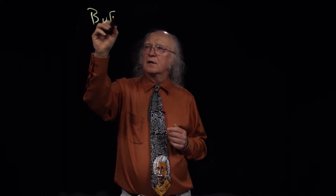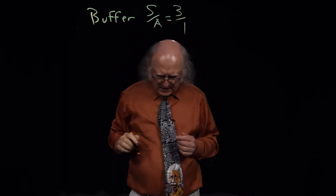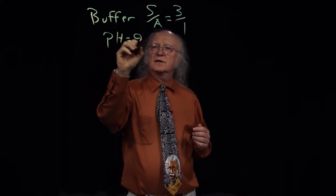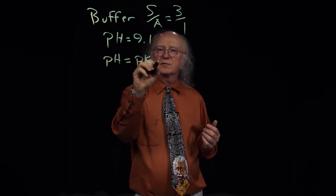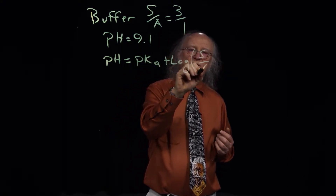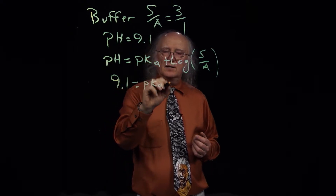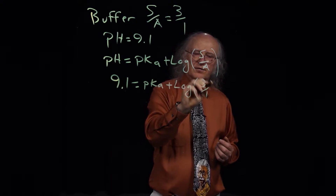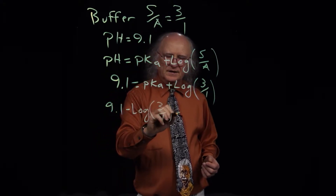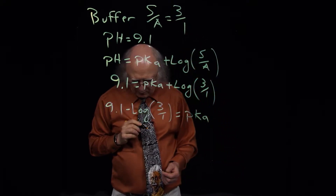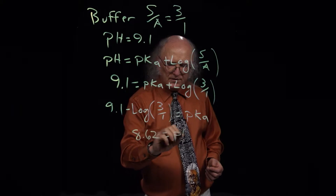Problem number 9 says that a buffer has 3 times as much salt as acid and the pH of the solution is equal to 9.1. The question is: what's the pKa value? Using Henderson-Hasselbalch, pH equals pKa plus the log of salt over acid, so 9.1 equals pKa plus the log of 3 over 1. Therefore, 9.1 minus the log of 3 equals pKa, which turns out to be 8.62.